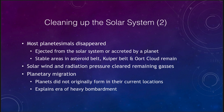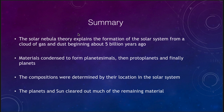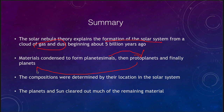To summarize: the solar nebula theory explains the formation of the solar system about 5 billion years ago from a cloud of gas and dust. Materials condensed to form first planetesimals, which accreted together to become protoplanets, which finally became the planets we see today. Compositions were determined by location — rocky and metallic worlds close to the hot Sun, icy worlds further away where it was colder. The planets and the Sun then cleared out the remaining material, whether planetesimals or gas and dust.